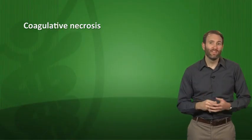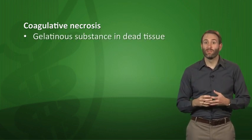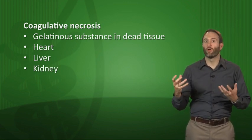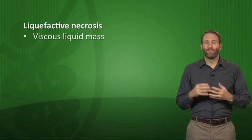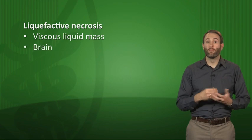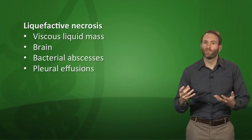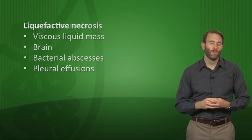Necrosis is cell death that is not orderly — everything we tried to avoid in apoptosis tends to occur here. All intracellular components spill into the surrounding area, causing inflammation. There are several types: coagulative necrosis is characterized by a gelatinous substance in dead tissue, occurring in the heart, liver, and kidney in low-oxygen environments like an infarction. Liquefactive necrosis produces a viscous fluid mass, seen more in the brain and in bacterial abscesses.